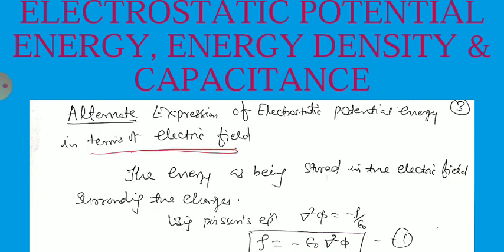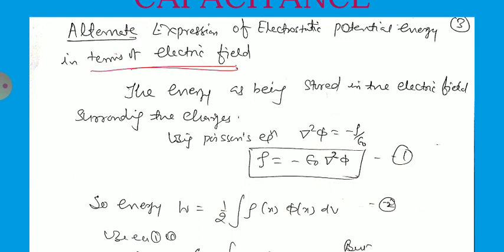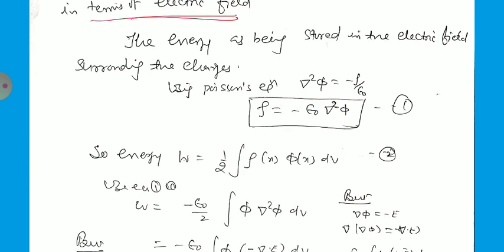The alternate expression for the electrostatic potential energy in terms of the electric field: the energy is stored in the electric field surrounding the charges. We can write, by Poisson's equation, ∇²φ = −ρ/ε₀, so the volume charge density ρ equals −ε₀ ∇²φ. So the net energy of the system W = (1/2) ∫ρ φ(X) dV, and in place of ρ we substitute the expression in terms of ∇², giving W = −(1/2) ε₀ ∫ φ ∇²φ dV.